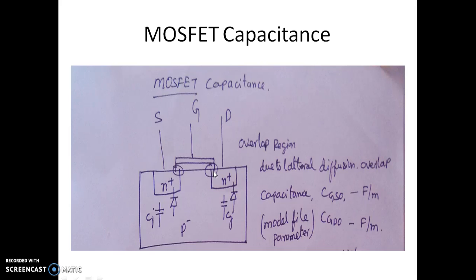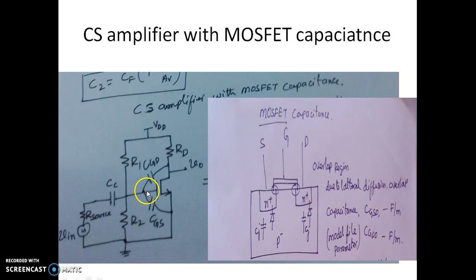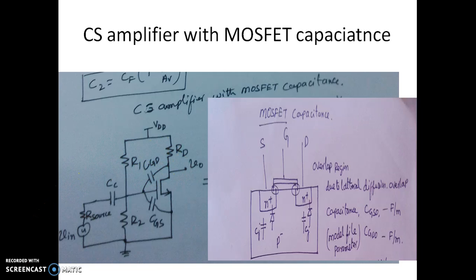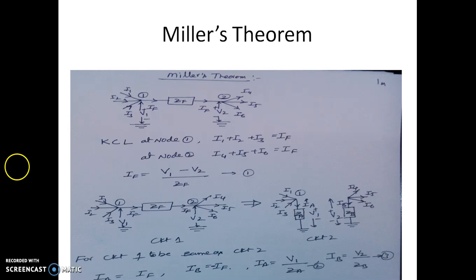Going back to the CS amplifier circuit with MOSFET capacitances: CGD is a floating capacitance — neither of its terminals are connected to ground. It is connected between the input and output terminals, so it must be carefully analyzed before we proceed with the frequency response. Whenever we have a floating capacitance between input and output, we use Miller's theorem.